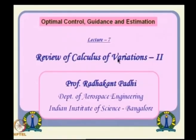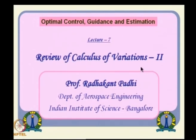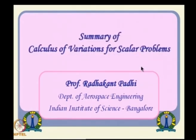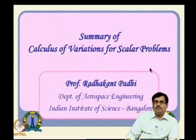Hello everyone. We will continue our lecture series on this optimal control guidance and estimation course. We have finished 6 lectures already and have given an overview of calculus of variation in scalar variables. In this particular lecture, I am going to briefly review what we discussed in the last class, followed by its extensions to vector, meaning multidimensional things, which is very similar to scalars anyway.